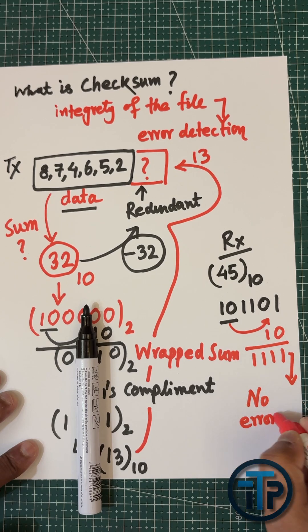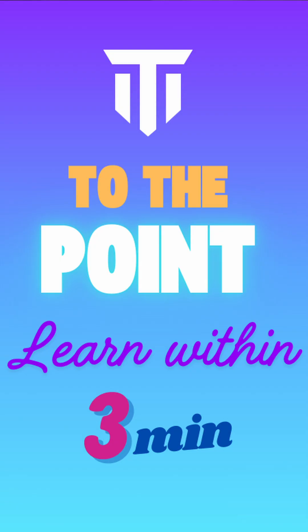If it is 1111, then there is no error. So we could say that in the receiver side the data has been received perfectly - there is no error.